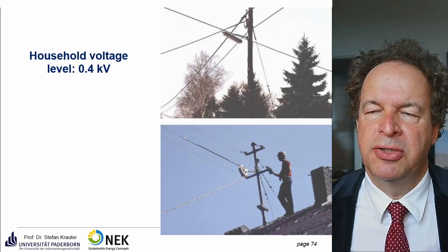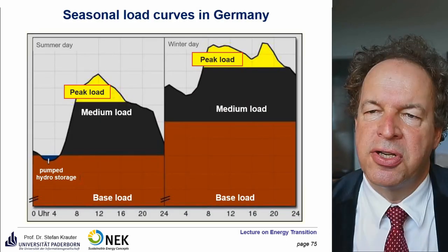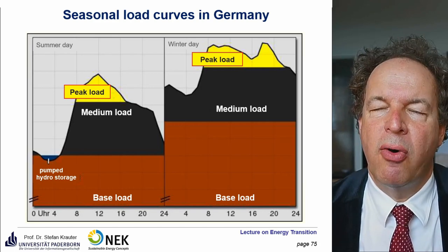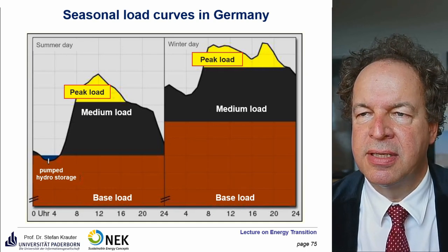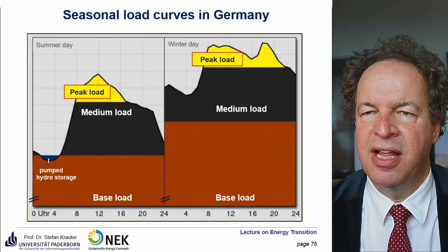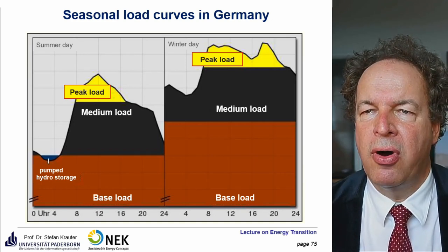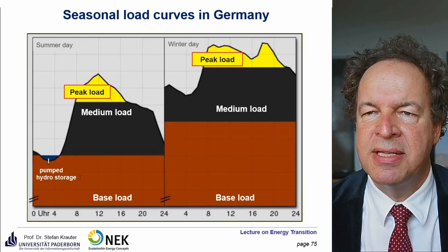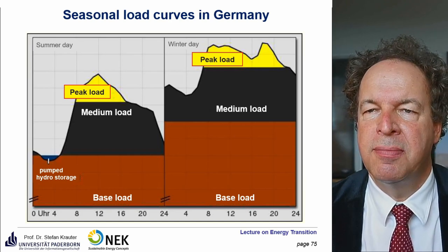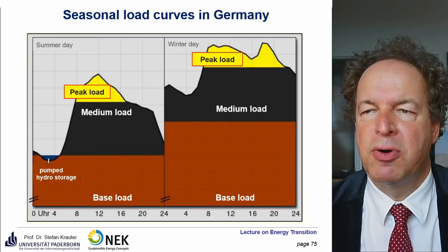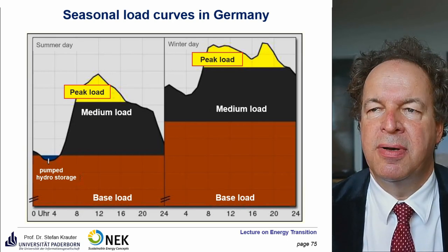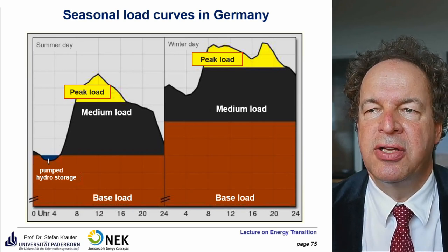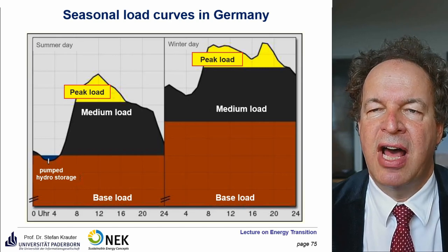In Germany, most of the distribution grid is now underground. Traditionally, load curves have a base load — power plants working 24 hours a day, 365 days a year — which were lignite plants designed in the 60s and 70s for cheap, constant electricity. Medium load requires more flexibility, traditionally handled by hard coal plants. Peak load was traditionally handled by hydro or gas plants, which can be throttled within minutes — hydro within one minute, gas in about five to eight minutes.